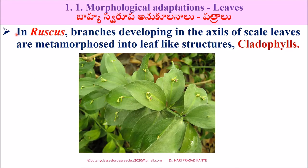In some cases, branches developing in the axils of scale leaves are metamorphosed into leaf-like structures called cladodes. In others, such as pine trees, similar leaf-like structures called cladodes are also present. This is known as cladodes.